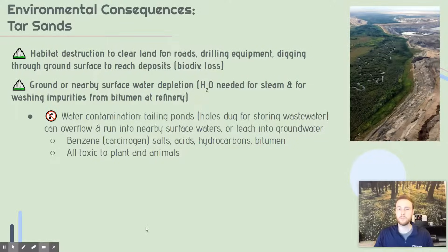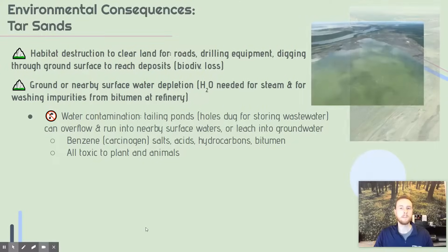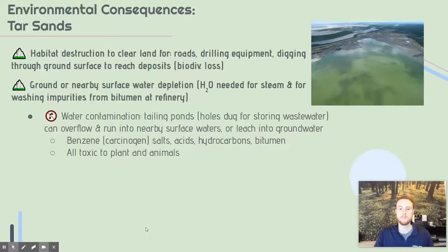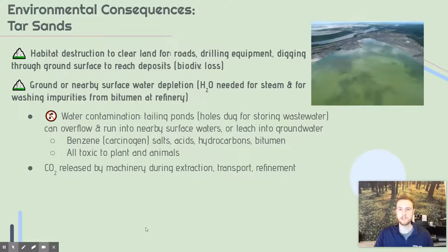Tailing ponds are a problem because they contain chemicals like benzene, salt, acid, and even hydrocarbons and leftover bitumen. Benzene is a carcinogen, so it can cause cancer. Finally, there's carbon dioxide released by the machines and by the actual mining process itself.